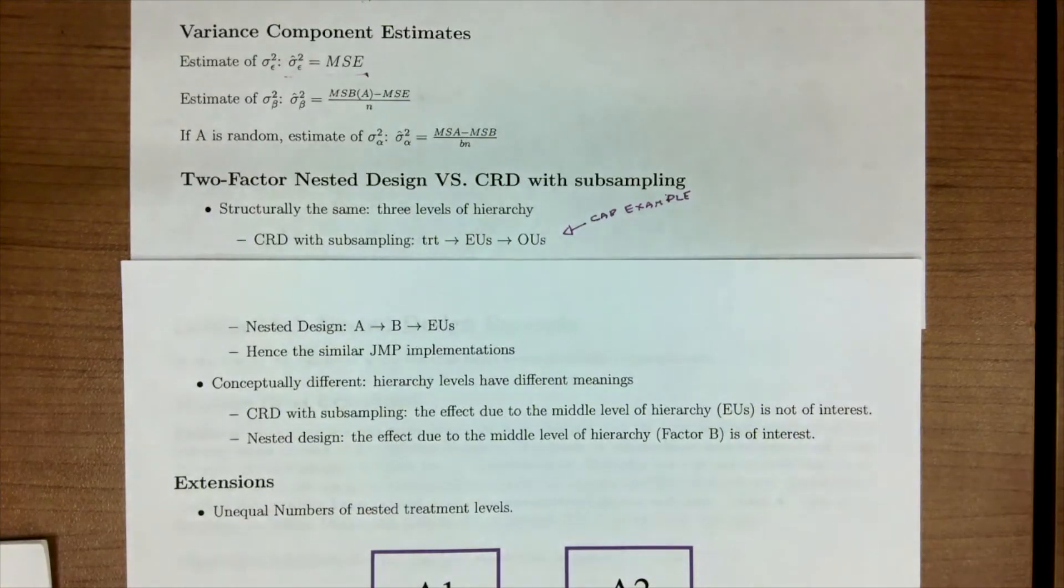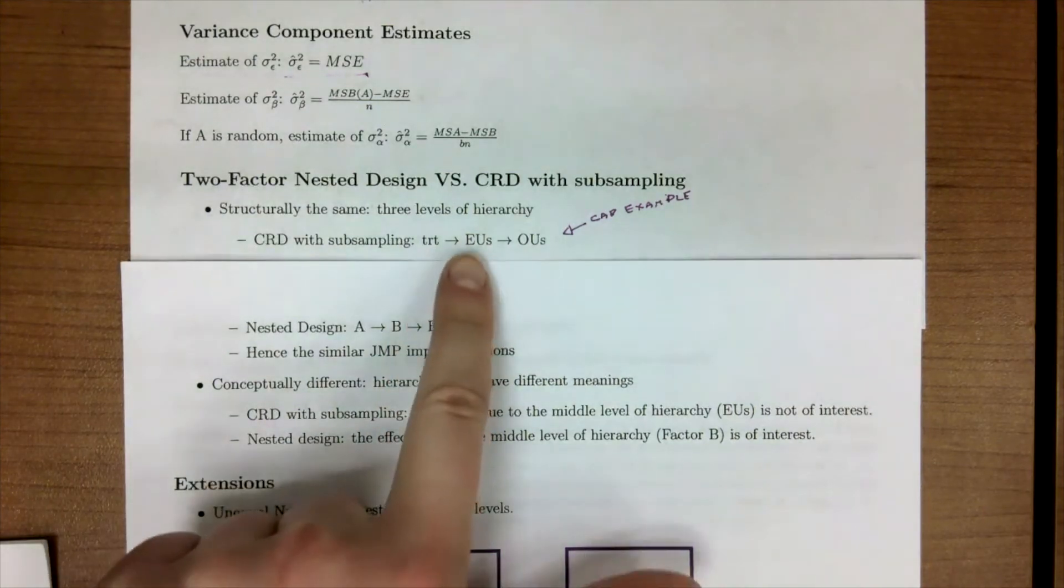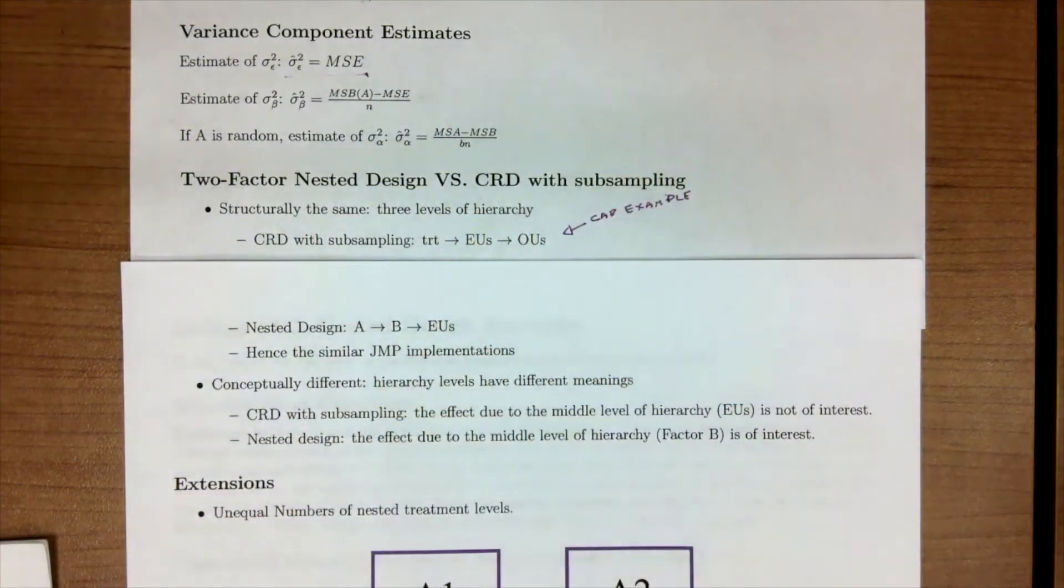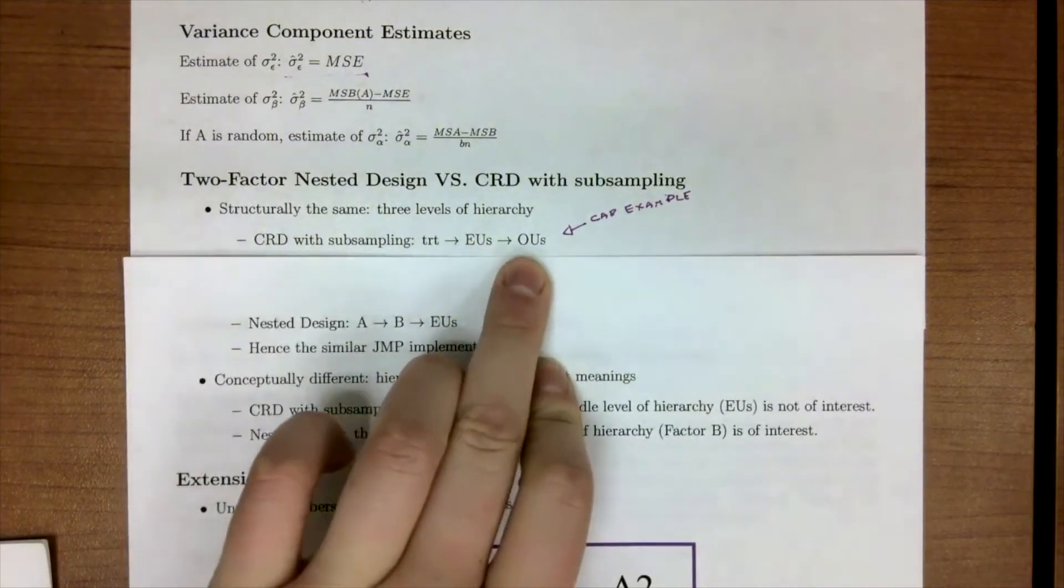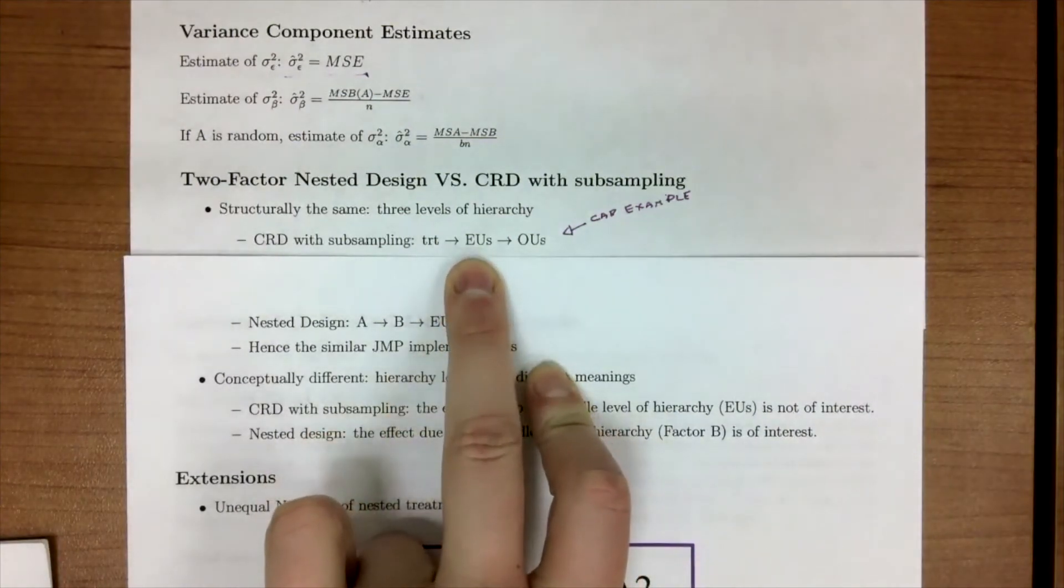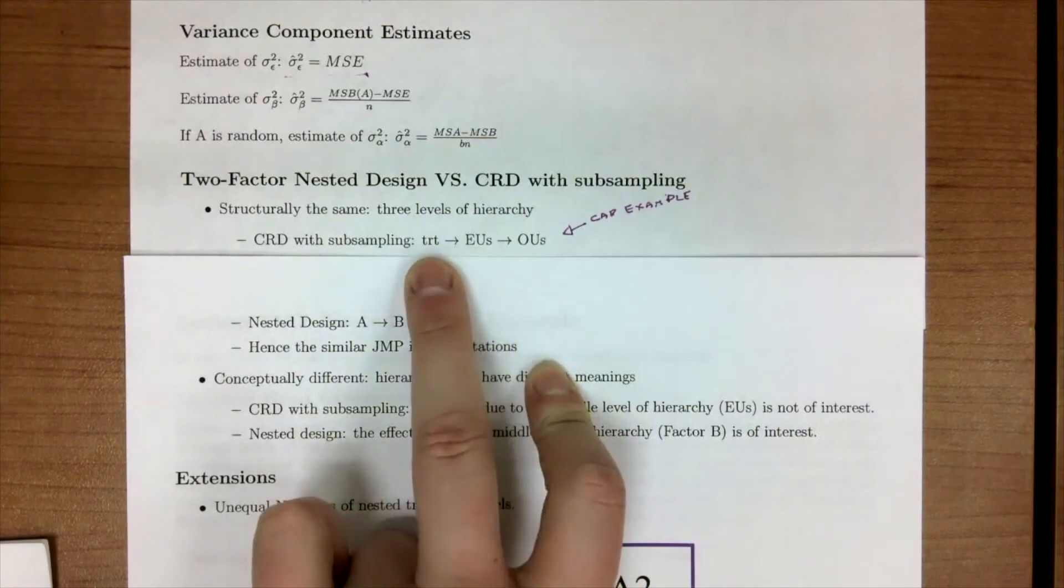CRD with subsampling, we don't care or we're not interested in the effects of the EUs. That is, if you go back to our car example, we were interested in the brand. So what we did is we had the brand of our car, which is our treatment. We took that car and we drove it around a couple times to get our observational units. And so we're not really interested in the variability between EU and EU. We're more interested in how do the treatments differ.